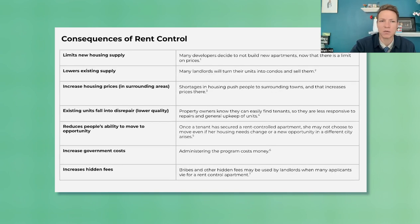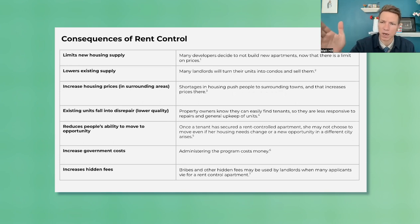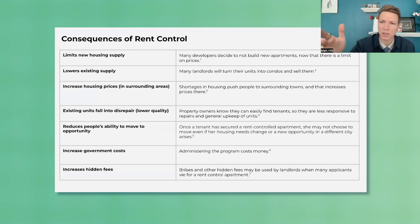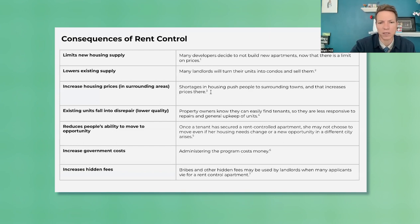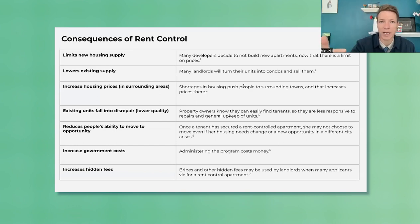There's lots of economics literature on rent control. Rent control is one of those things in economics where we have our theory of what's going to happen — it's going to be a shortage, leading to other bad effects — and then we have the empirical literature where economists actually go and look at what happens. The theory aligns with the empirics; all the predictions we would think actually happen in the real world. Here's a list of outcomes of rent control, carefully cited with footnotes to actual peer-reviewed economics papers.